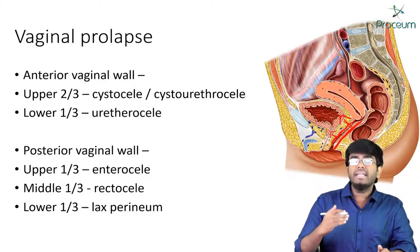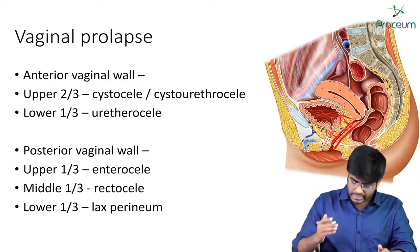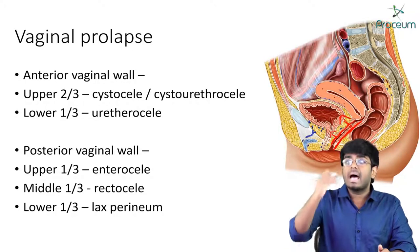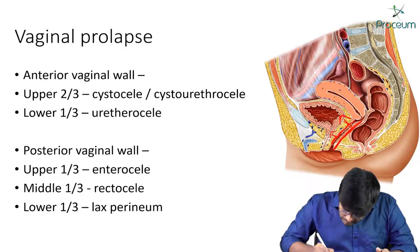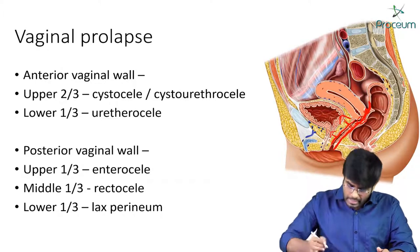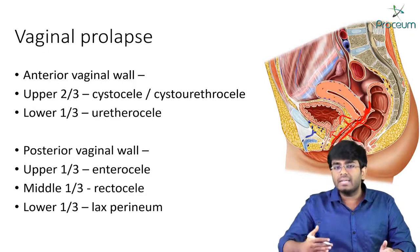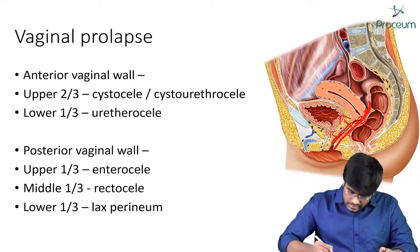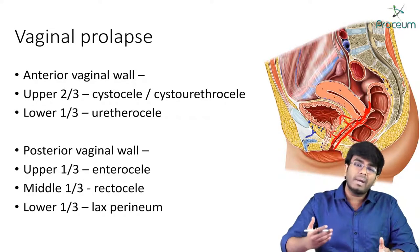The posterior vaginal wall is divided into three parts. The upper one-third is in relationship with the pouch of Douglas. The middle one-third is in close relationship posteriorly with the rectum. And the lower one-third is in close relationship with the perineum and perineal body.